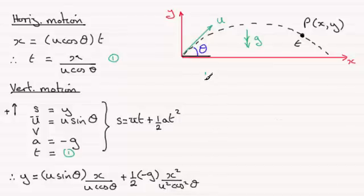So all we need to do now is just clean this equation up. What we've got is y equals, and for this first term here, the u's cancel, and we're just left with x times sine theta over cosine theta. Well, sine theta over cosine theta is tan of theta.